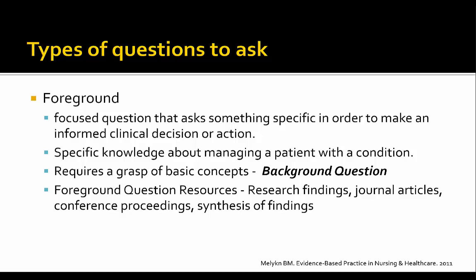Once you have an answer to your background question and understand the basic concepts about the condition or problem you're trying to address, as well as understanding what your intervention options are, you then get to a foreground question — the second type of clinical question in evidence-based practice. Where this differs from background questions is that instead of being broad, it is very focused on a specific condition or type of patient. Going back to the forest analogy, the background question shows you all the trees; with a foreground question, you're focusing on a specific tree or a specific type of intervention.